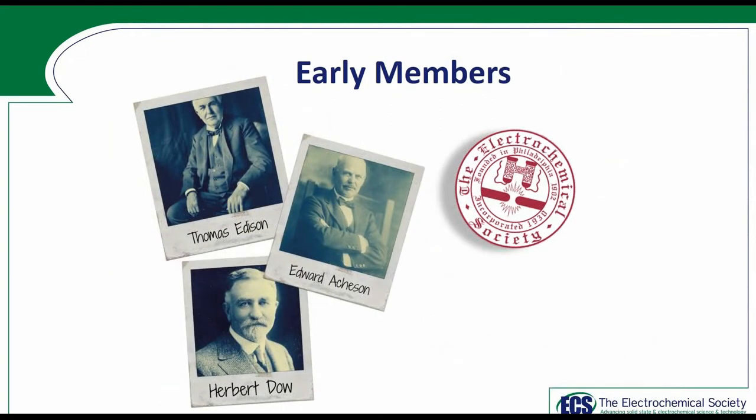A little information about ECS: the Electrochemical Society was founded in 1902 as a nonprofit educational organization. Even in its early years, membership included an impressive core of active participants such as Edward Acheson, the original manufacturer of graphite, Herbert Dow, founder of Dow Chemical Company, and Thomas Edison, an honorary member of the society.